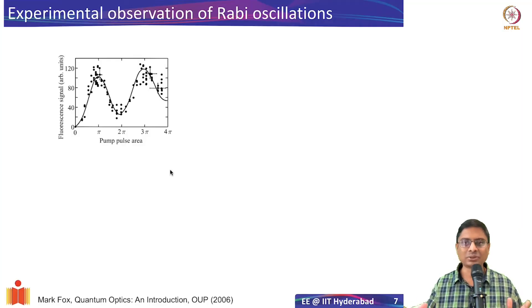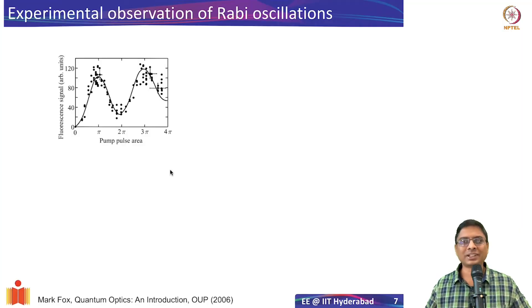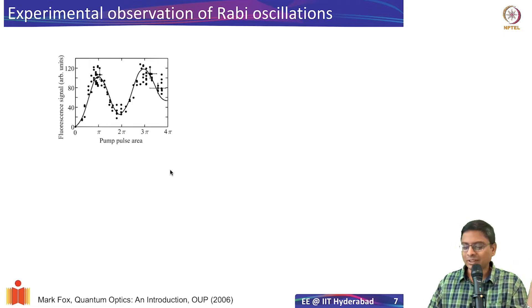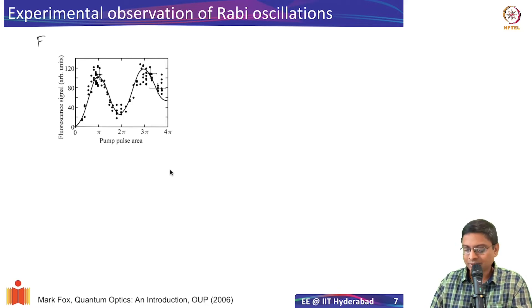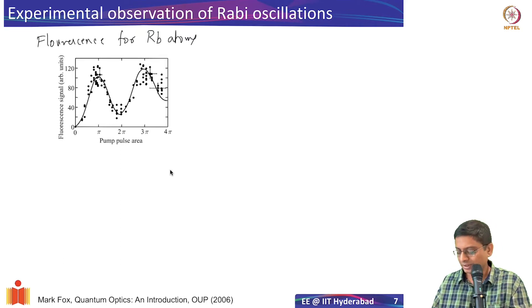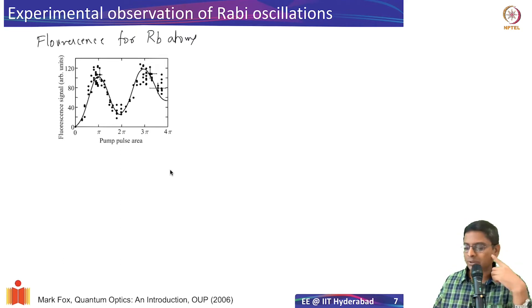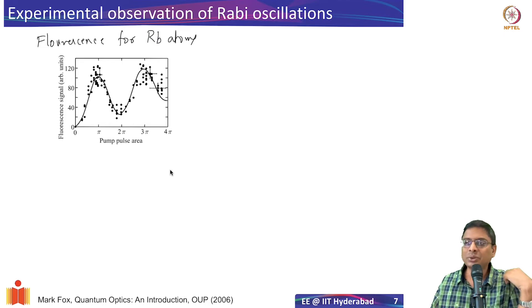Let me quickly show you some experimental observations and then we can go from there. This is not a theoretical curiosity — you can actually observe it. The graph we are seeing here shows fluorescence from rubidium atoms. I have taken this from the textbook by Mark Fox, which is on quantum optics.